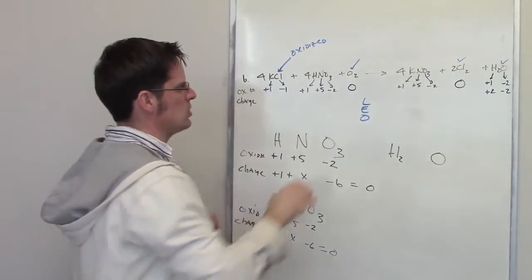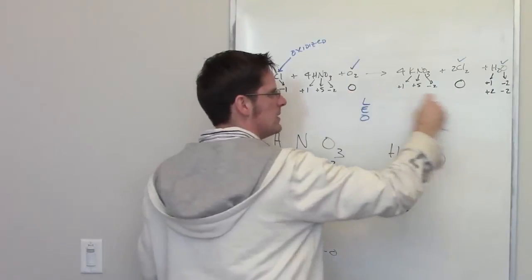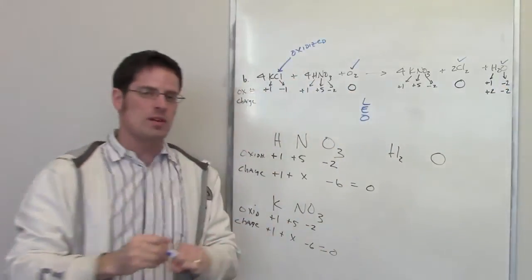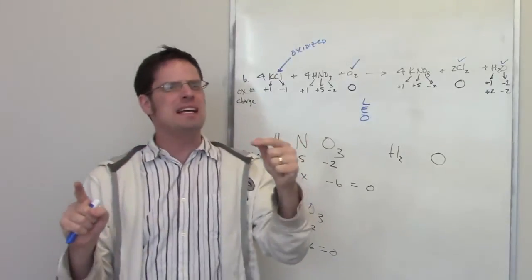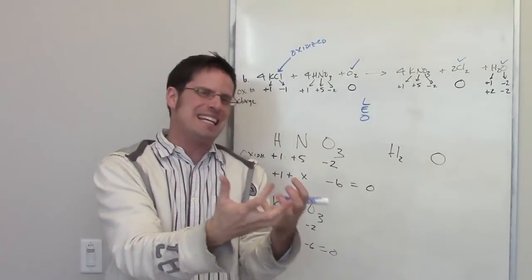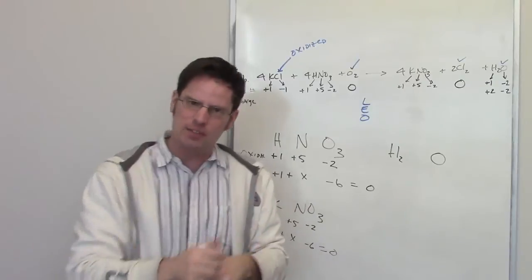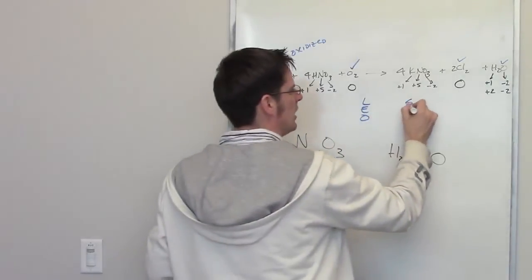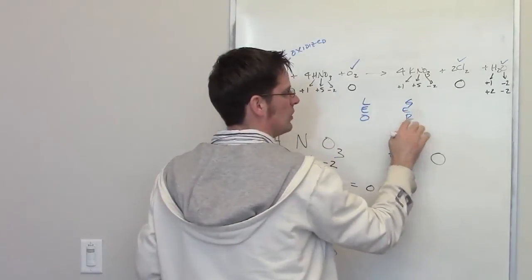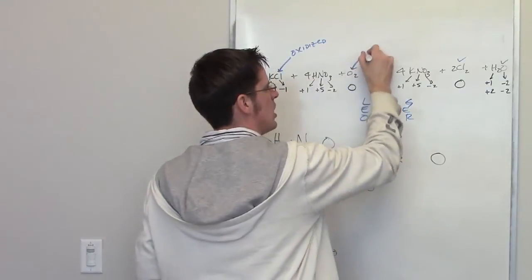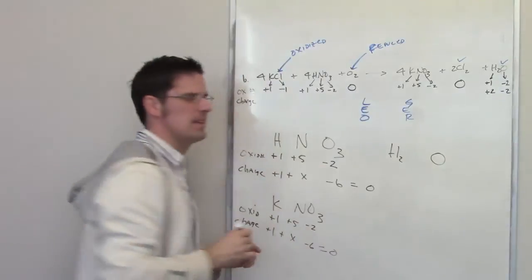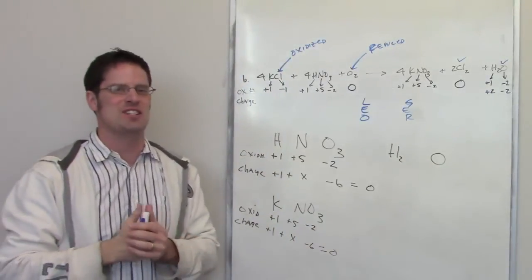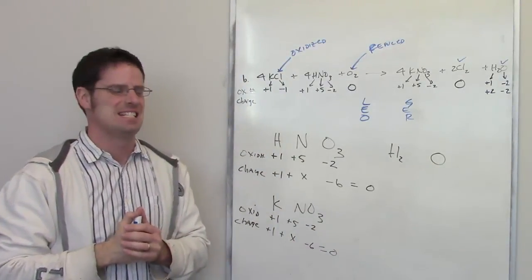Now let's look at this O2. The O2 goes from zero to negative two. It's going from zero to negative two, so it's becoming more negative. How do you become more negative? By receiving or gaining electrons. They have negative charges. So if I've gained electrons, that is reduction. So this oxygen has been reduced. And that is the answer to the question.